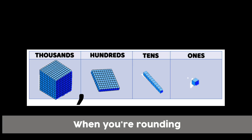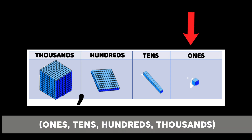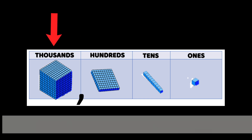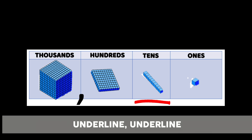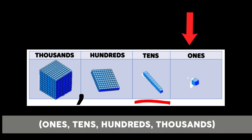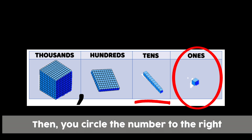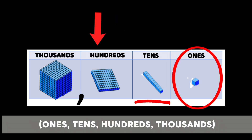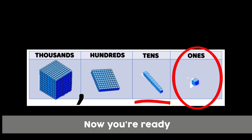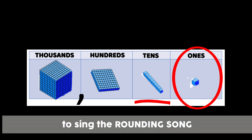When you're rounding to the nearest place — ones, tens, hundreds, thousands — underline that place. Then you circle the number to the right. Now you're ready to sing the rounding song.